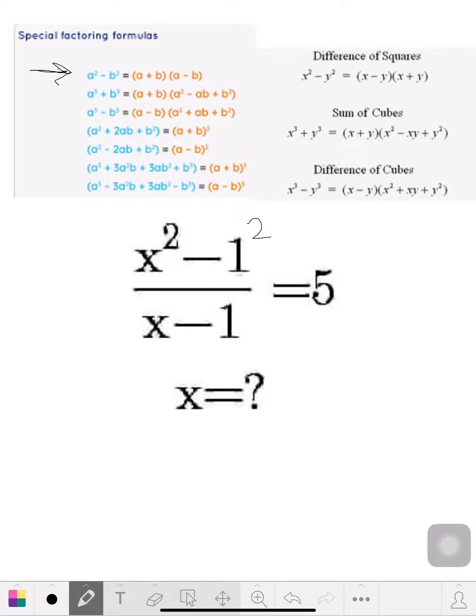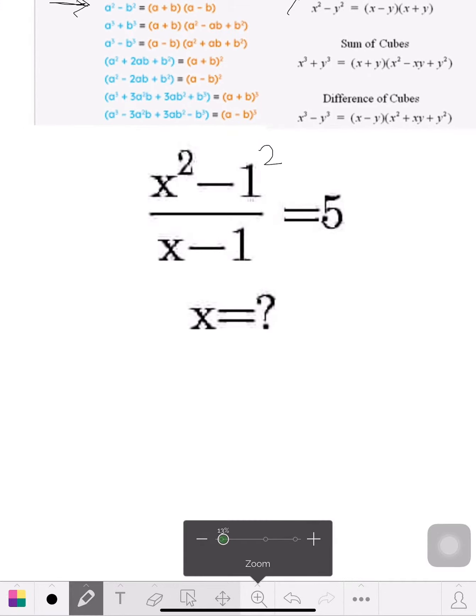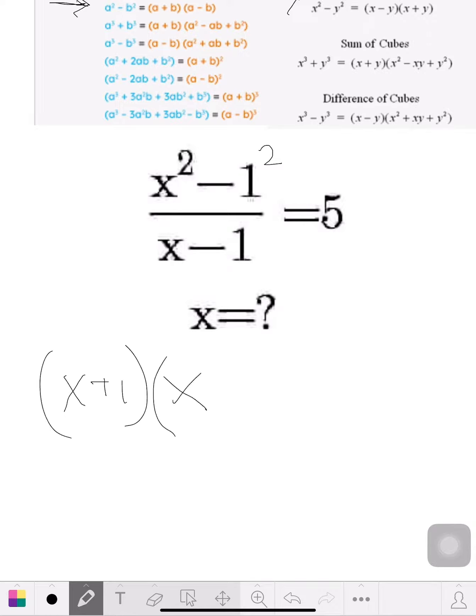They call it the difference of squares, it's right over here, and that's what I think falls into this category. Okay, so let's rewrite this formula like that, so we'd have x plus 1 times x minus 1 over x minus 1 equals 5.